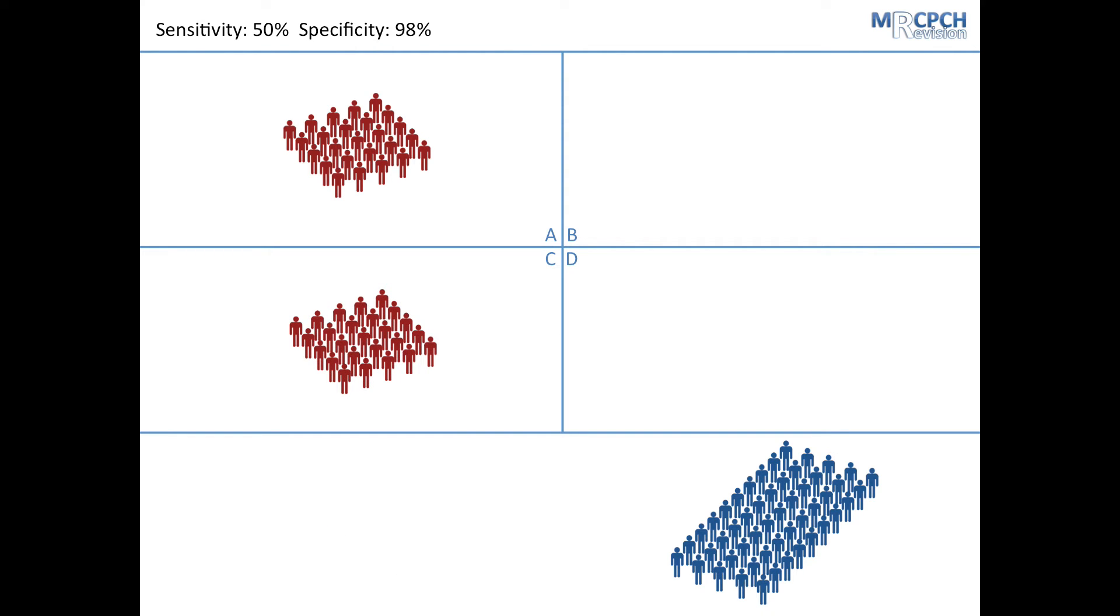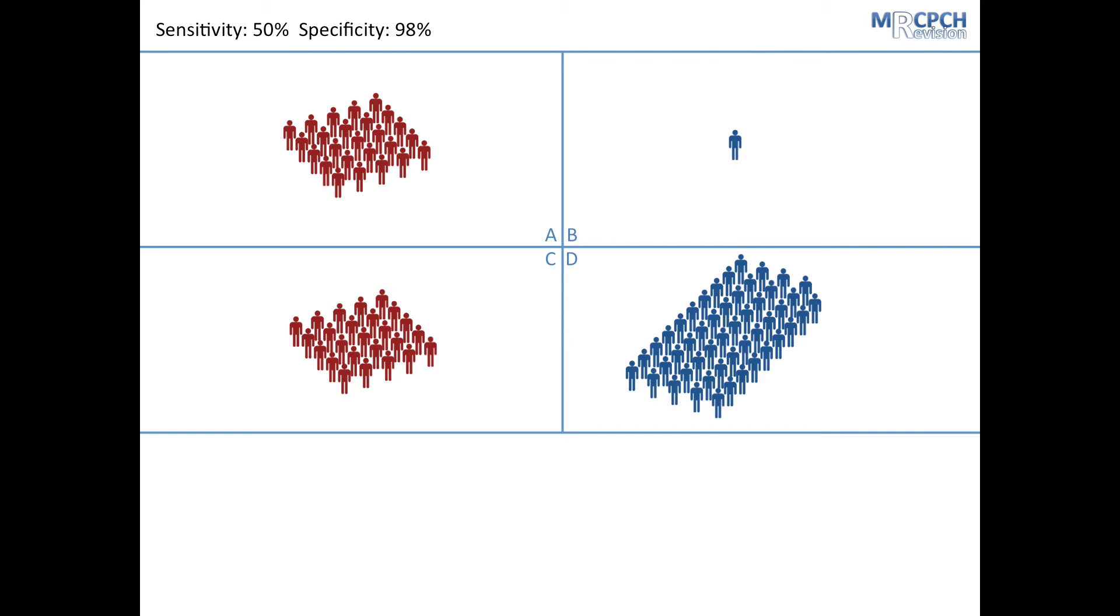That leaves 25 to populate box C. Moving on, we know that specificity is D divided by B plus D. Again, we know that specificity is 98% and that B plus D is 50. So, D is 0.98 times 50, which is 49. And that leaves 1 behind to populate box B.